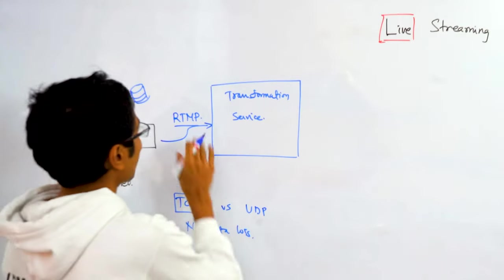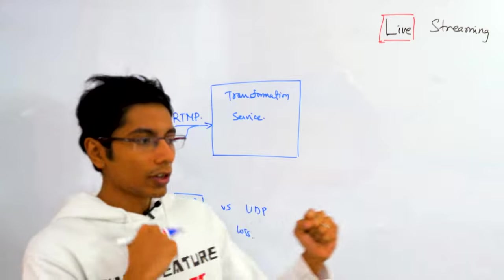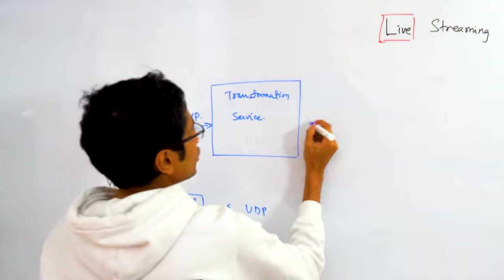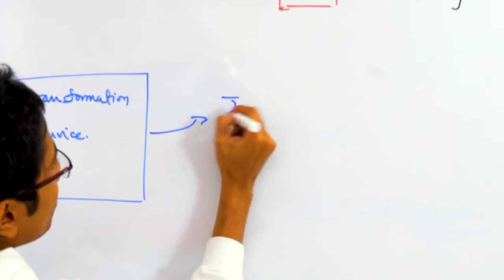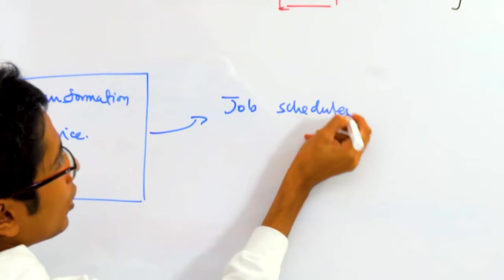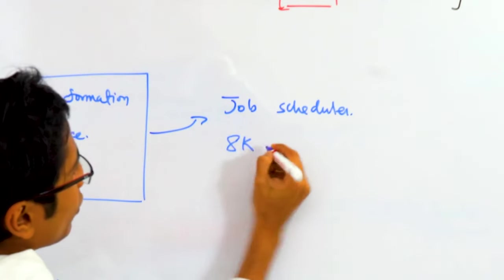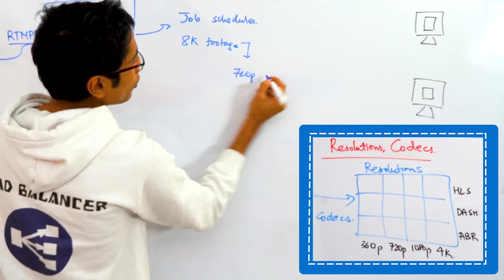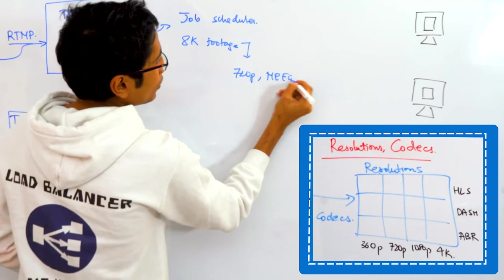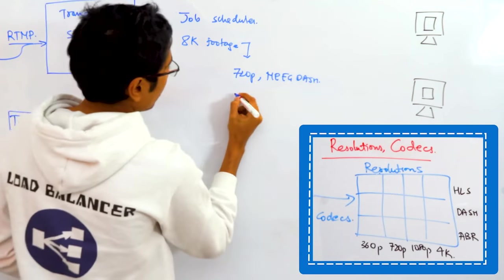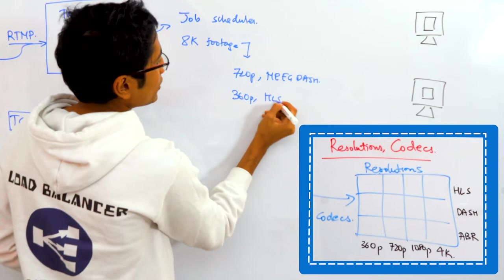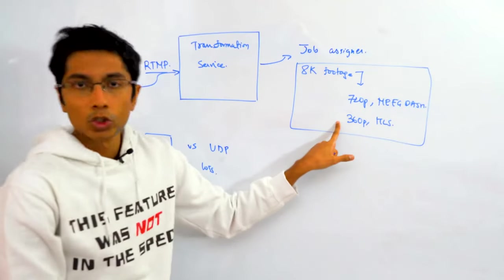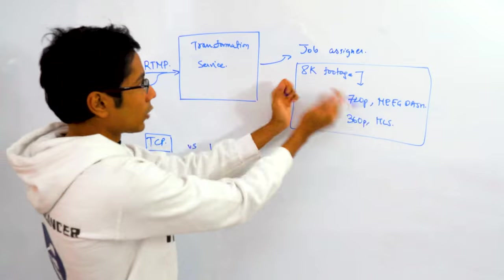Over here in the transformation service we are going to be taking this RTMP stream and we are going to be converting it into different resolutions and different formats so that we can meet our heterogeneous clients. So this transformation engine will need something like a job scheduler which will be taking tasks of taking 8K footage and converting it into 720p video MPEG dash. You might also have 360p HLS and so on. You might have hundreds of tasks like this depending on how many resolutions and how many codecs you want to convert this video into.